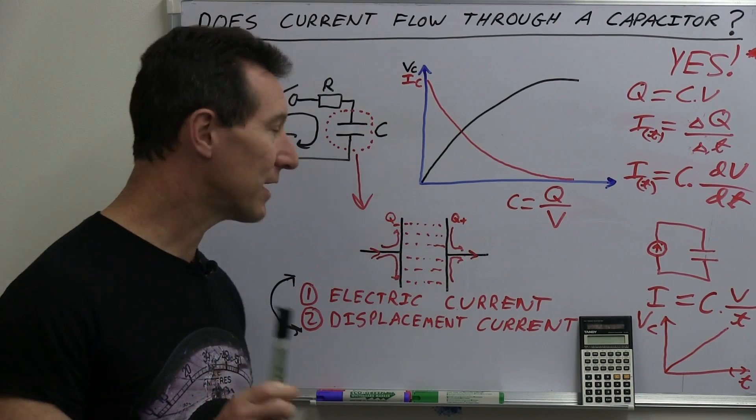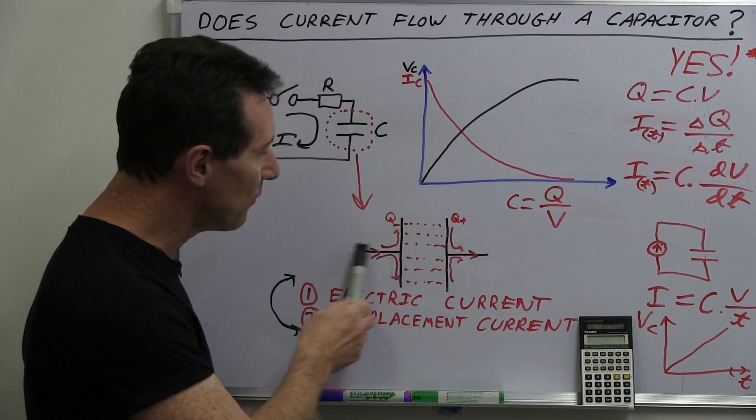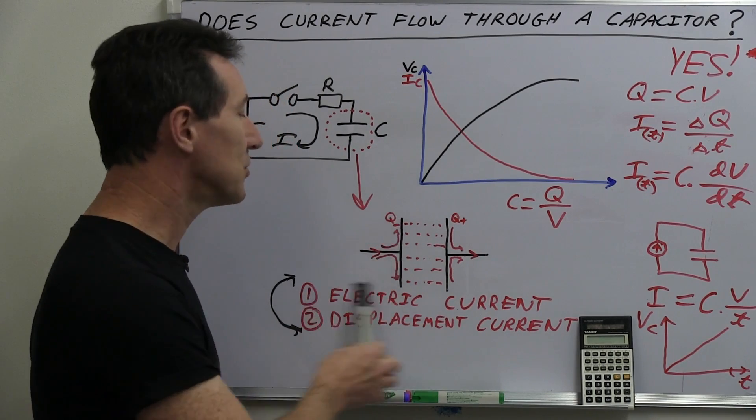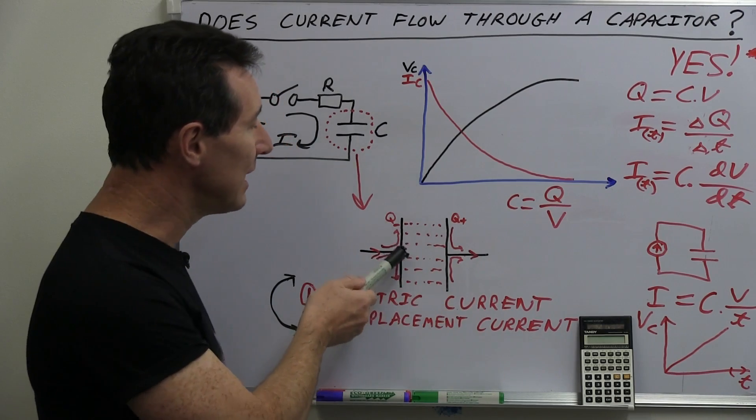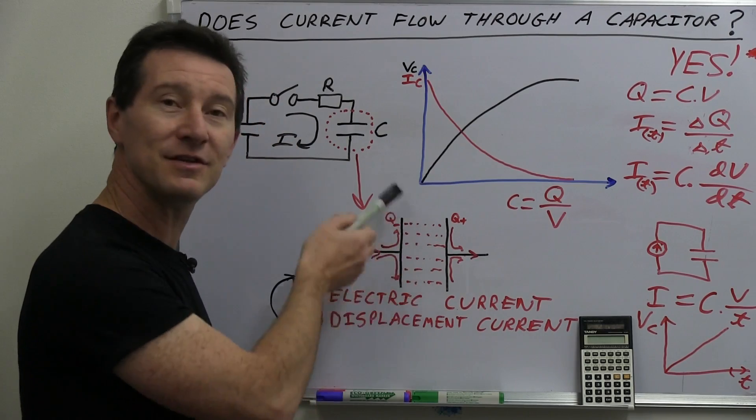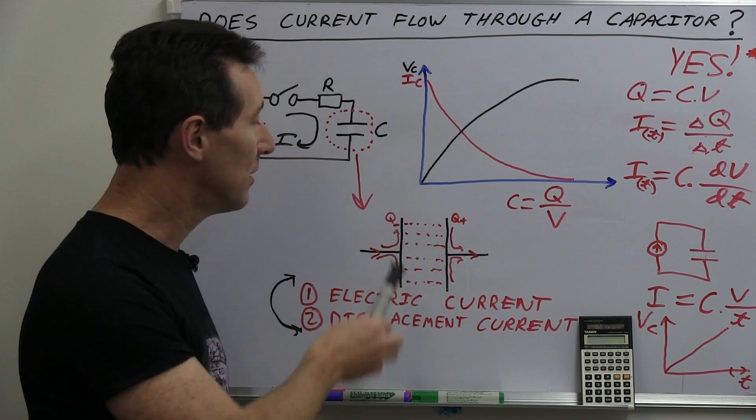When you're on the conductor, i.e. the wire coming in and the plate, you can talk in terms of electric currents and everything's just fine and dandy. But once you leave that conductor and get into the insulator, i.e. the dielectric material, you've got to start talking in terms of changing electric fields, which creates changing magnetic fields.